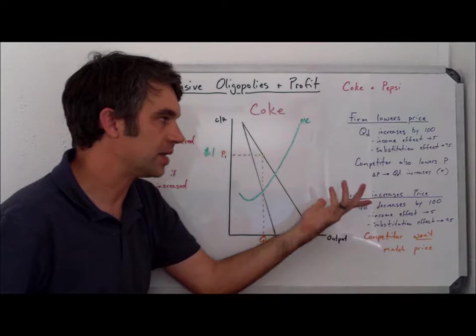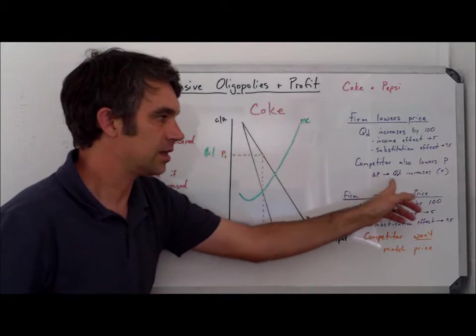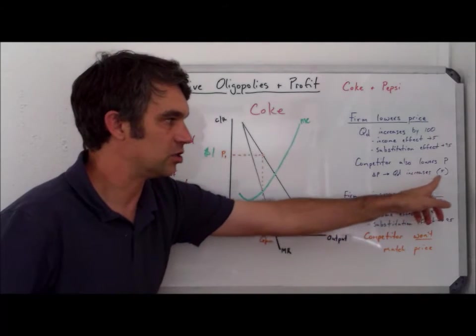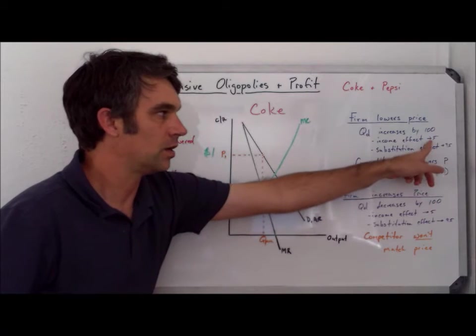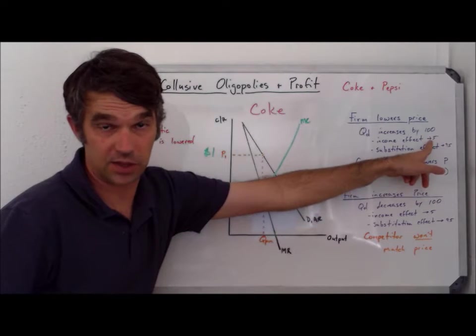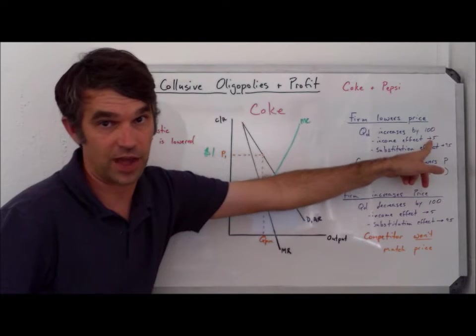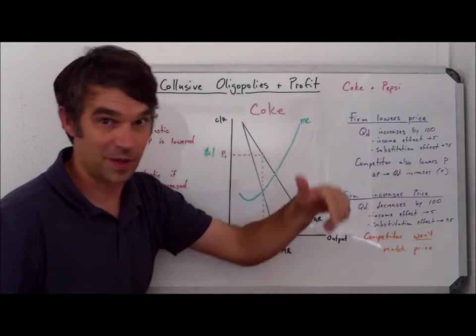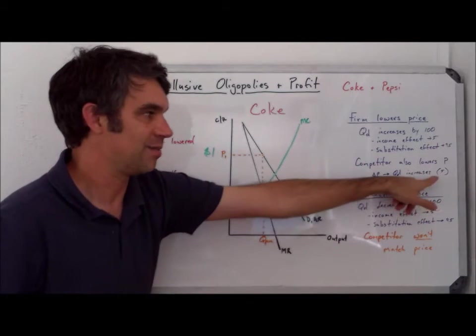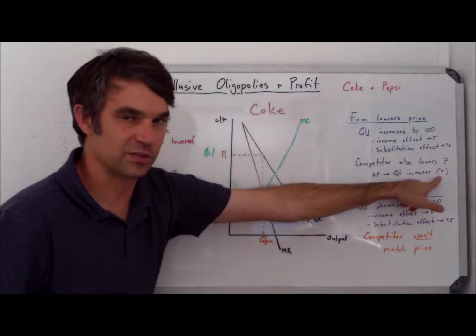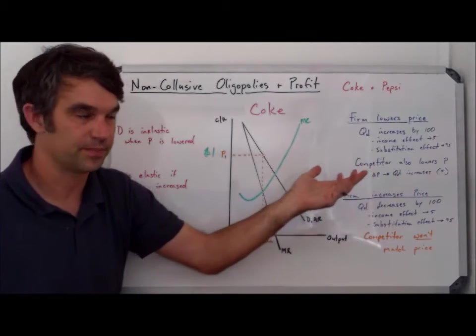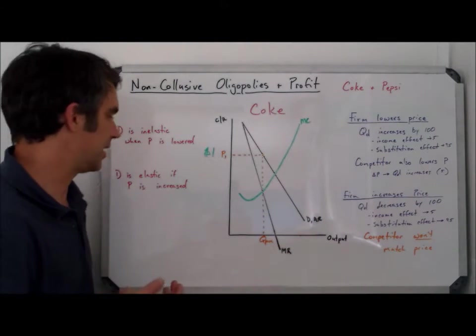So all that happens is that Coke's quantity demanded is going to increase just by the five people who are buying it because of the lower price due to the income effect. However, if Pepsi has also lowered their price, maybe Coke doesn't even get all five of those people, maybe just two or three. So the bottom line is that the demand curve for Coke is very inelastic when price is lowered.